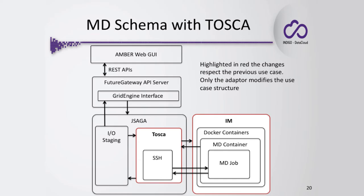It seems quite complicated with a lot of interactions, but when I switch this with the new JSAG TOSCA adapter you can see the difference is very little. The only thing that changes is the TOSCA component, which behaves totally differently, but from the API point of view the situation doesn't change at all — the calls remain the same. What is happening under the hood is totally different: TOSCA contacts the IM, the IM instantiates the container, and the TOSCA component interacts via SSH as soon as the container is available to execute the molecular dynamics job.